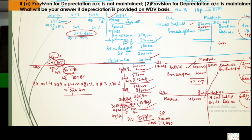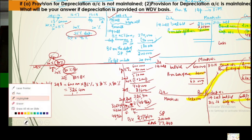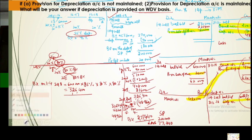So accounting remains the same with or without provision. With provision, entries happen in both accounts — four transactions majorly recorded: sale recorded, depreciation charged, depreciation transferred to asset account to write off, and profit or loss recorded. Without provision: sale recorded, depreciation recorded directly in asset account, profit or loss recorded — no separate transfer entry needed. This is how we solve these questions.